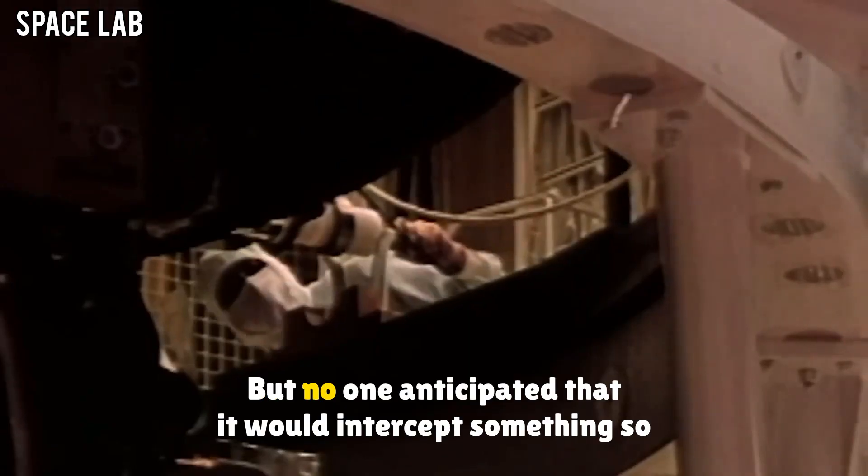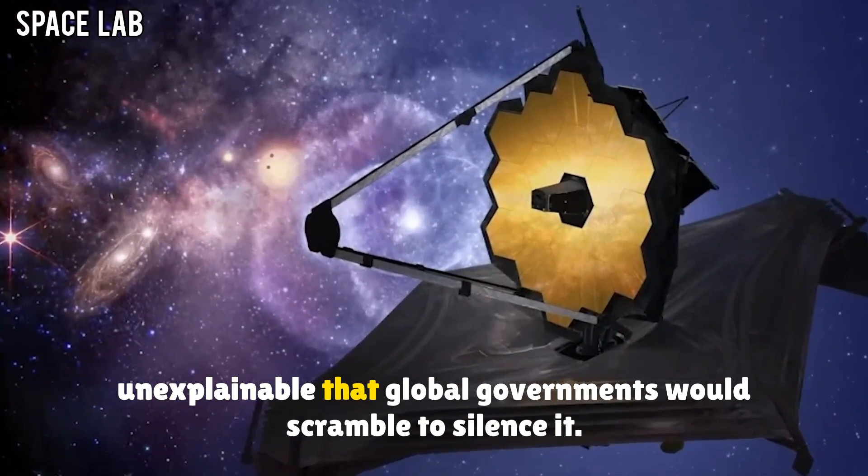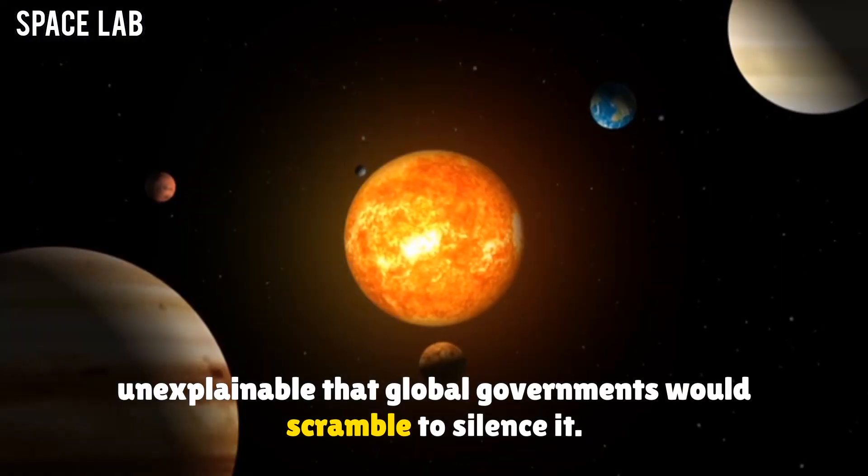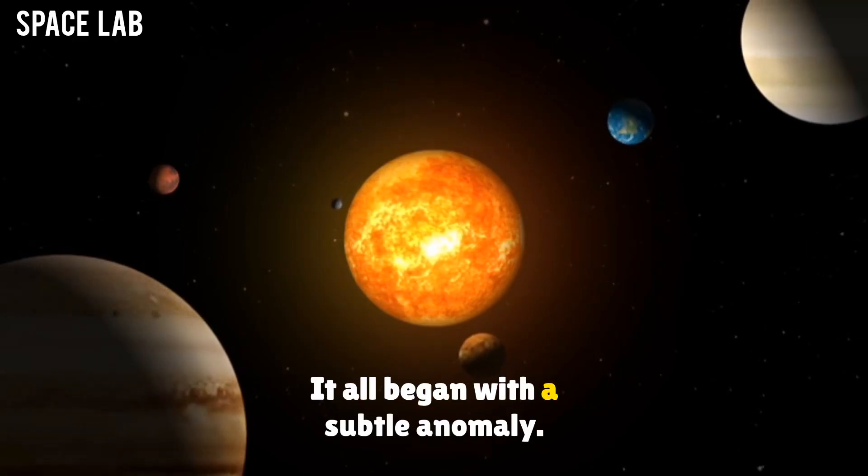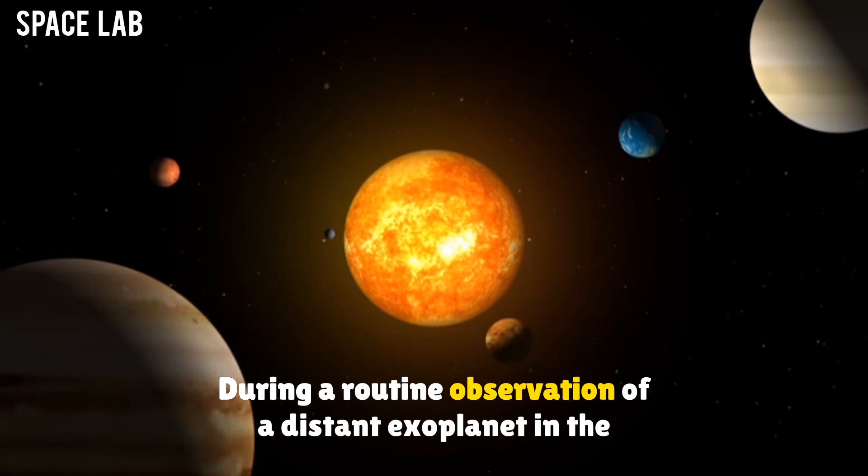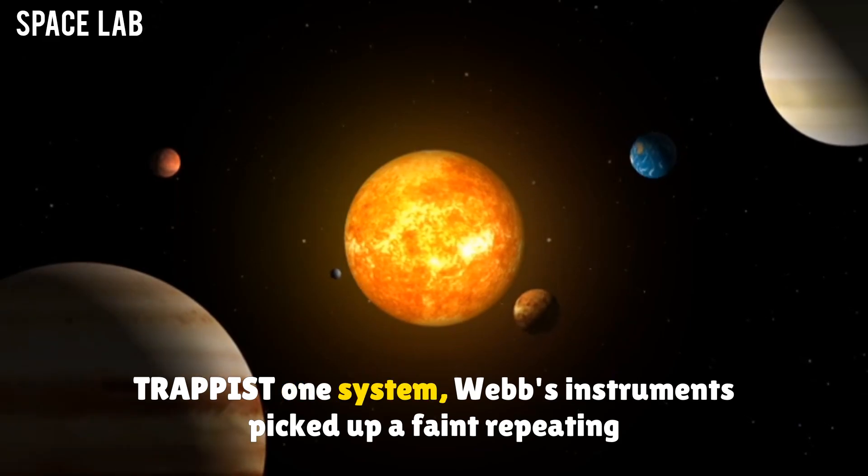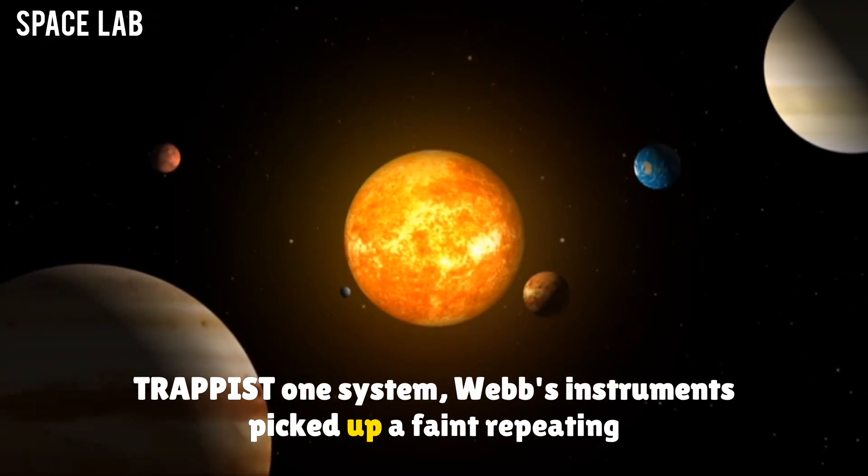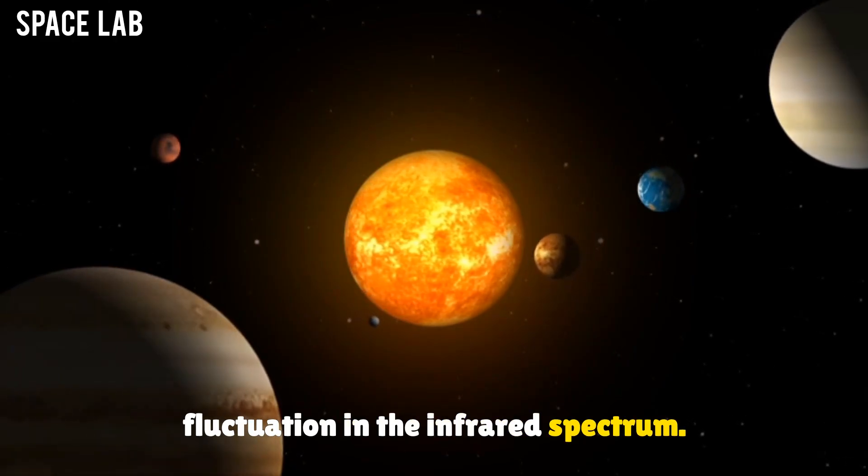But no one anticipated that it would intercept something so unexplainable that global governments would scramble to silence it. It all began with a subtle anomaly. During a routine observation of a distant exoplanet in the TRAPPIST-1 system, Webb's instruments picked up a faint, repeating fluctuation in the infrared spectrum.